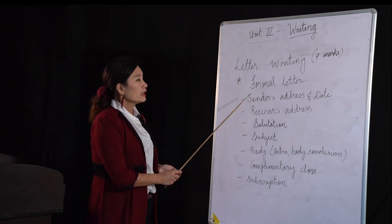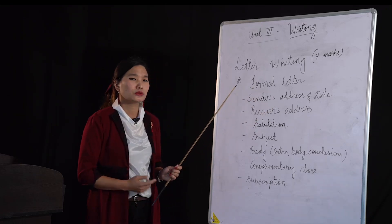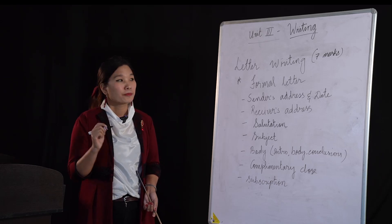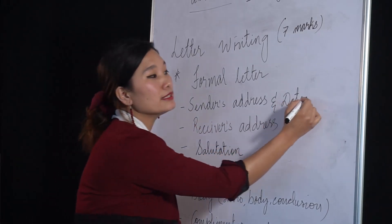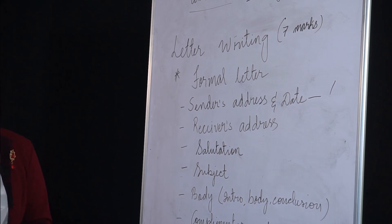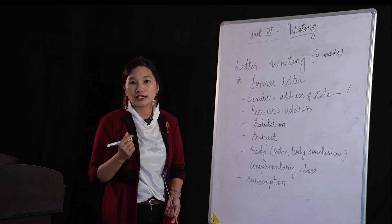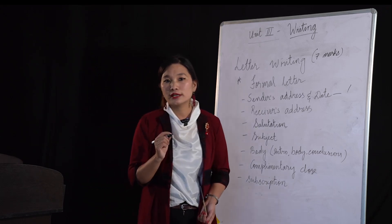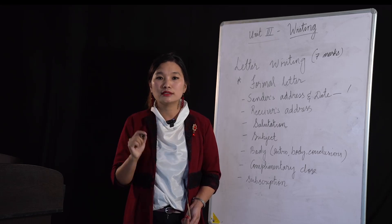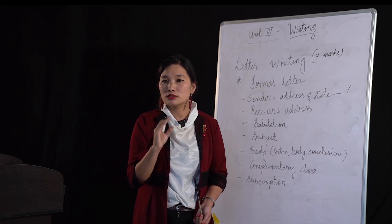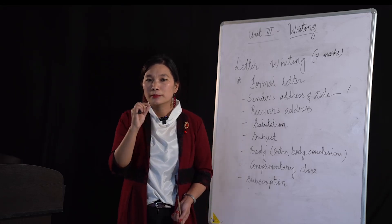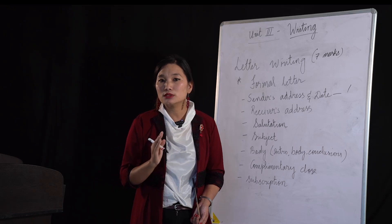The first thing you have to write is the sender's address and date. The sender will obviously be you, because you are the one going to write the letter. Write your address and the date very carefully — doing that itself will give you one mark. When it comes to writing the date, we do not encourage short forms. For example, if you are writing 6th May 2020, use the word MAY instead of numbers, and write it in full form.